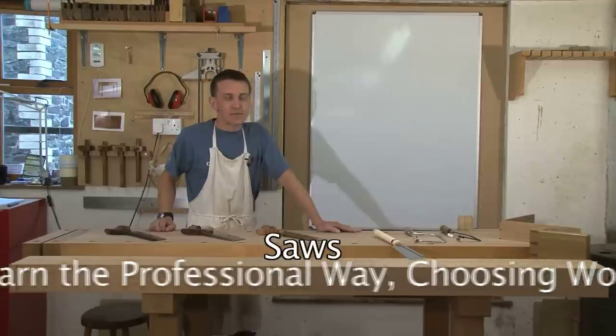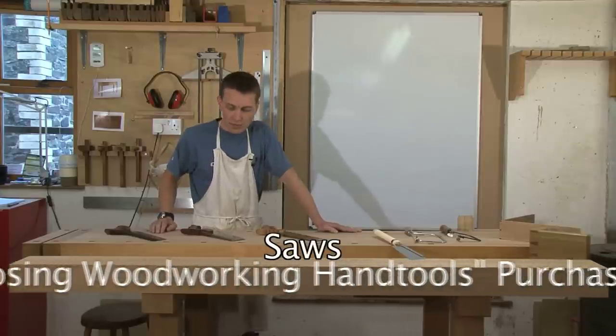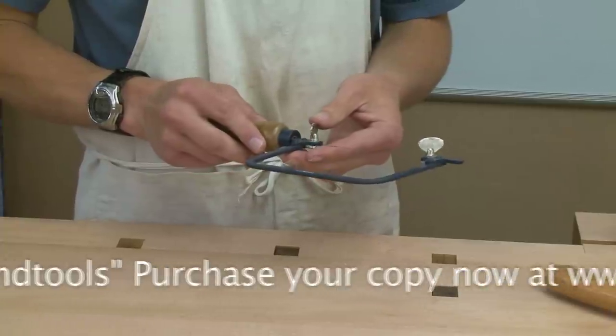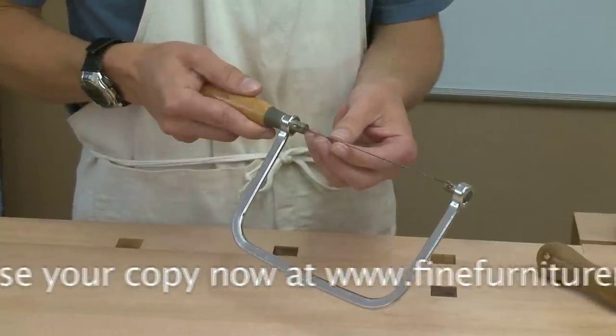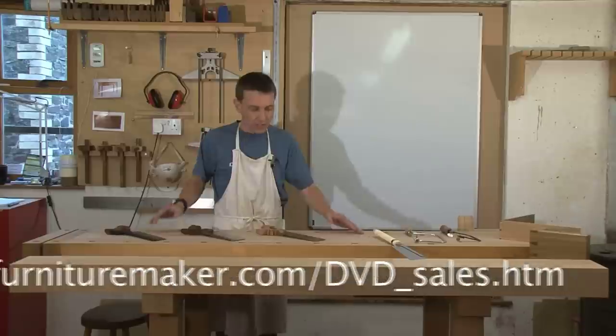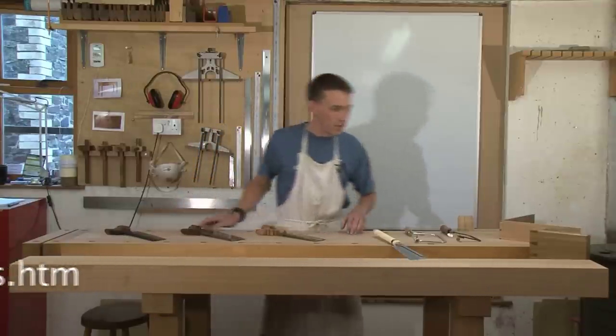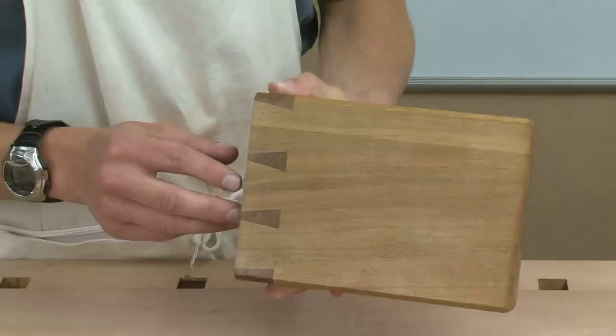Right, today we're going to talk about saws. And I've got three different types of saw here on the bench. I've got a piercing saw, coping saw and three types of dovetail saw. And these are saws included in our kit because when we teach people how to make these bookends, you'd need these three types of saws.